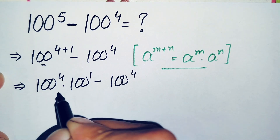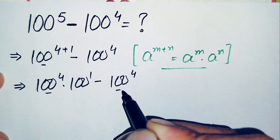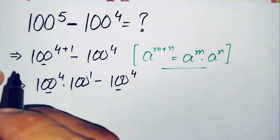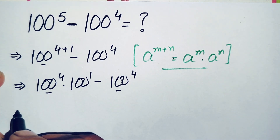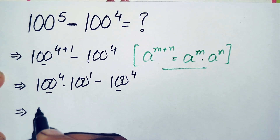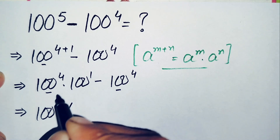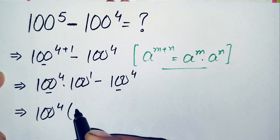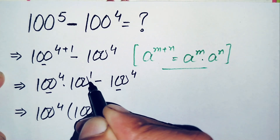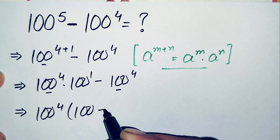Here in both terms, 100 raised to power 4 is common, so we will take it out as a common factor. This becomes 100 raised to power 4 times the quantity 100 raised to power 1, which is simply 100, minus 1.